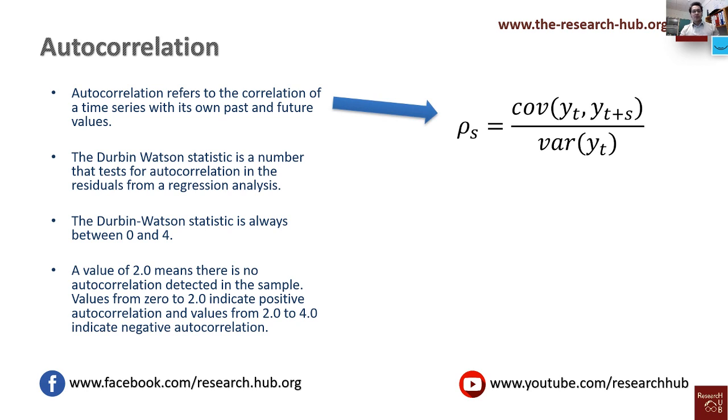For normal time series calculation of autocorrelation, the equation is ρ_s equals the covariance of today's value with yesterday's or tomorrow's value, divided by the variance of the time series. That is the correlation of the two time series, known as the autocorrelation in this context.